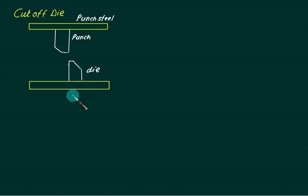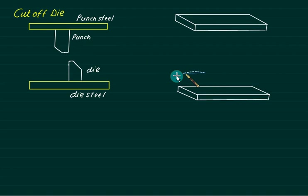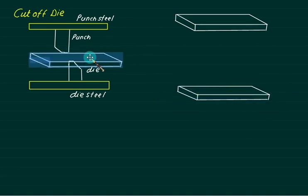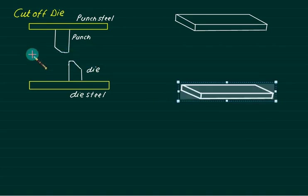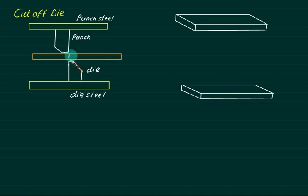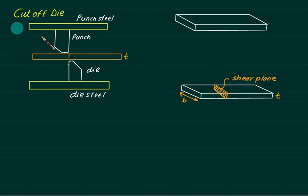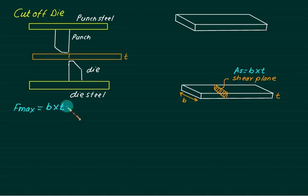A cutoff die consists of a punch, dart, punch steel (holding the punch), and die steel. A plate is inserted between the cutting die. In the front view, cutting occurs at the shear plane. The shear area is B × t, where B is the width and t is the thickness. The maximum force required is F_max = B × t × τ.